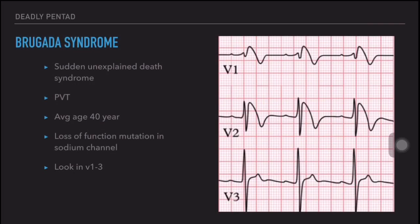Earlier it was called sudden unexplained death syndrome. Patients usually present with polymorphic ventricular tachycardia, and the average age of onset is 40 years. The pathogenesis is actually a loss-of-function mutation in the sodium channel. Always look at leads V1 to V3 for diagnosing Brugada syndrome.